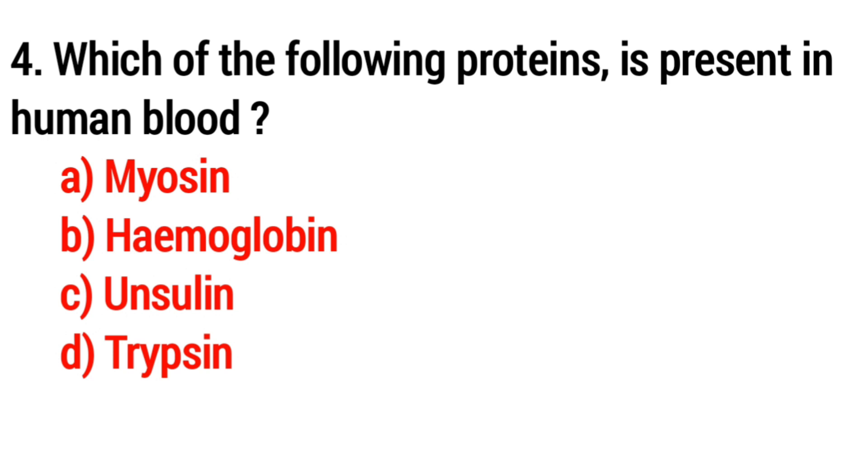Question number 4: Which of the following proteins is present in human blood? Answer: Option B, hemoglobin.